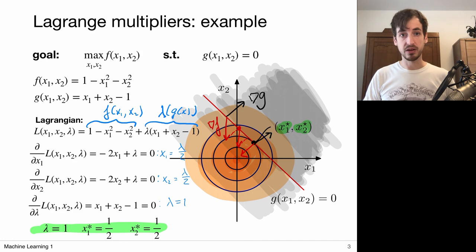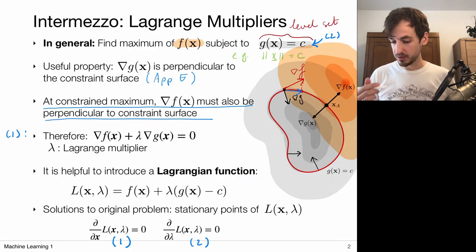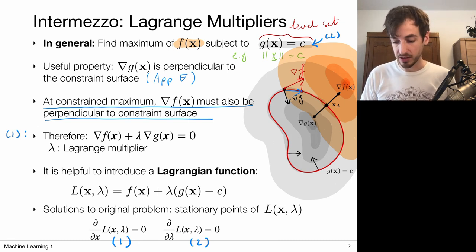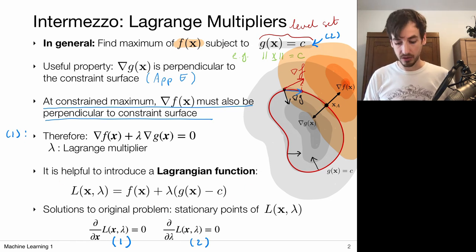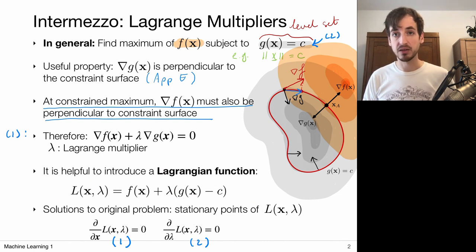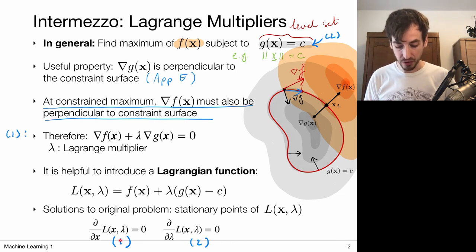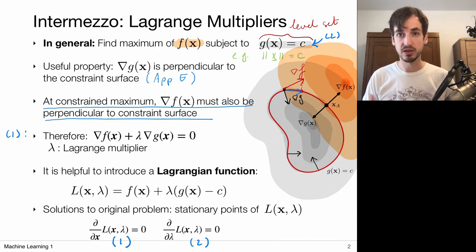That describes the method of Lagrange multipliers for solving constraint optimization problems. The recipe is: define the function you want to optimize, write your constraint as g(x) = c, then define the Lagrangian L(x, lambda) = f(x) + lambda times (g(x) - c). Finally, look for stationary points by setting the derivative with respect to x to zero and the derivative with respect to lambda to zero, solve the system, and that gives your constrained solution.